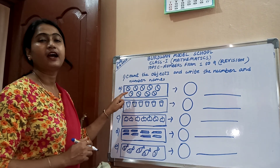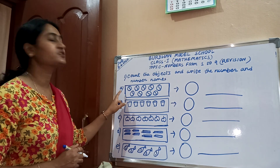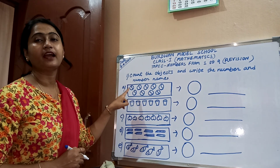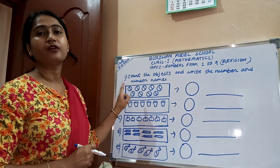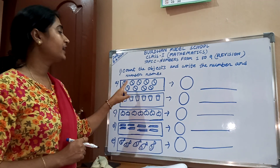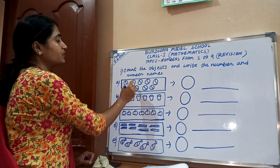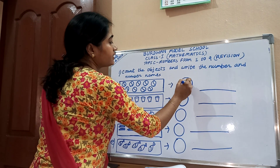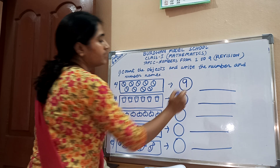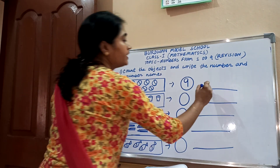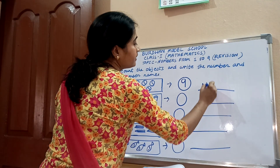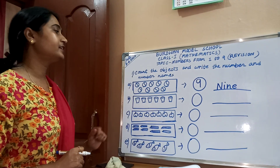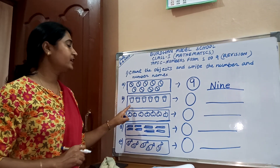This is box number A — count the marbles: one, two, three, four, five, six, seven, eight, nine. How many marbles? Nine. Write 9 inside the circle, and write the number name: N-I-N-E.